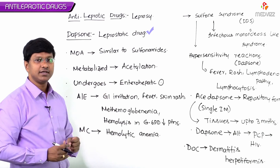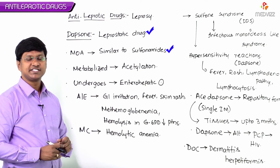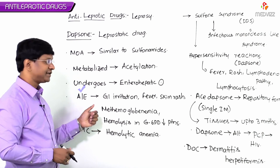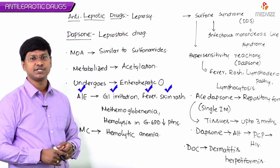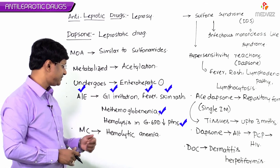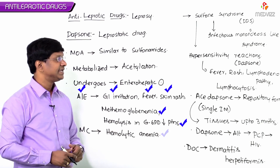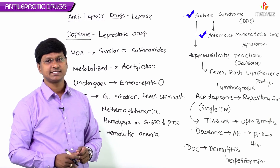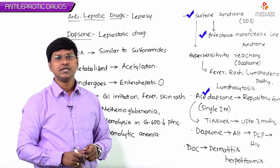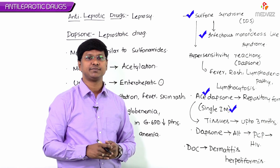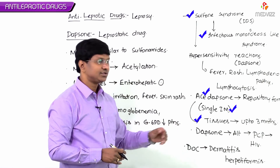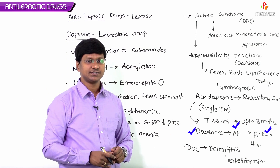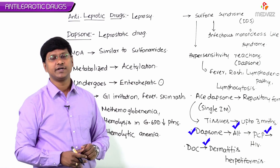To summarize: dapsone is a leprostatic drug related to the sulfonamides with a similar mechanism of action. It is metabolized by acetylation and undergoes enterohepatic circulation. Adverse effects include gastrointestinal irritation, fever, skin rash, methemoglobinemia, hemolysis in G6PD-deficient patients, and the most common adverse effect is hemolytic anemia. Dapsone can cause sulfone syndrome (infectious mononucleosis-like syndrome). Acidapsone is the repository form providing inhibitory levels for up to 3 months via a single IM injection. Dapsone is an alternative drug for Pneumocystis infection in HIV patients and the drug of choice for dermatitis herpetiformis.